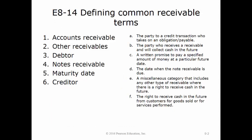This exercise tests your knowledge of common receivable terms. Accounts receivable would be F, the right to receive cash in the future from customers for goods and/or services performed. Other receivables would be E, a miscellaneous category that includes any other type of receivable where there is a right to receive cash in the future. Debtor would be A, the party to a credit transaction who takes on an obligation or payable. Notes receivable would be C, a written promise to pay a specified amount of money at a particular future date.